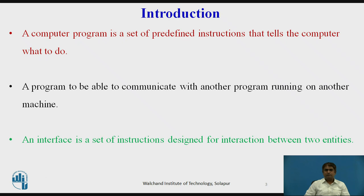If we need a program to be able to communicate with another program running on another machine, we need a new set of instructions which tells the transport layer to open the connection, then send data to and receive data from the other end, and close the connection. A set of instructions of such kind is normally referred to as an interface — a set of instructions designed for interaction between two entities.